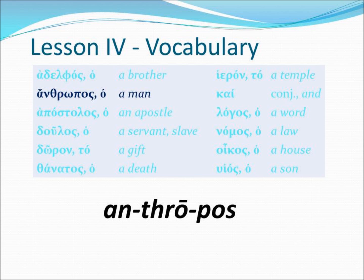Our second word is anthropos. Once again, we have a masculine article, which shows that anthropos is a masculine noun. Anthropos means 'a man.' If we see ho anthropos in a sentence, it would mean 'the man.'